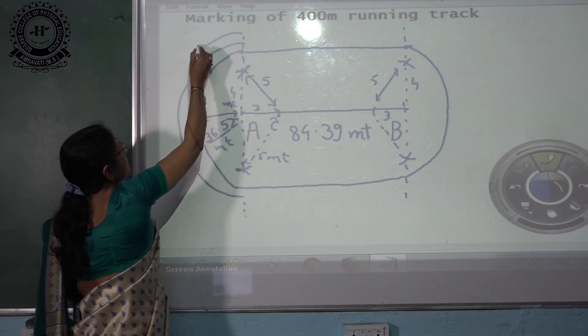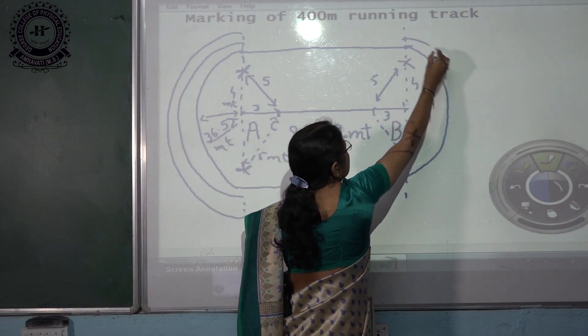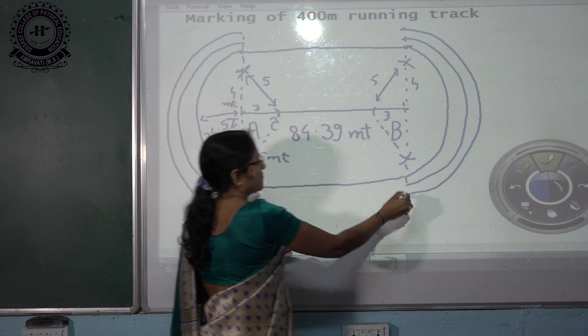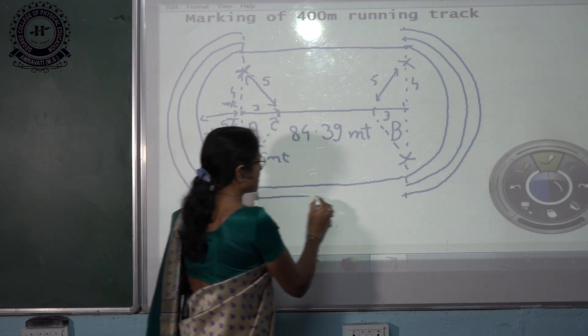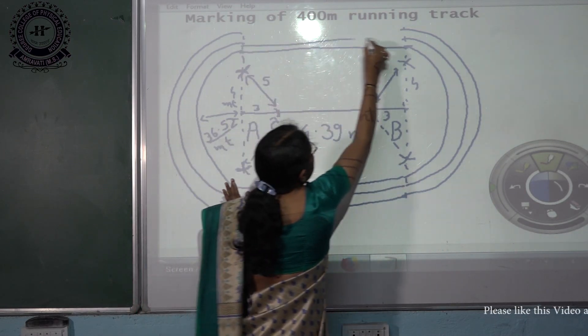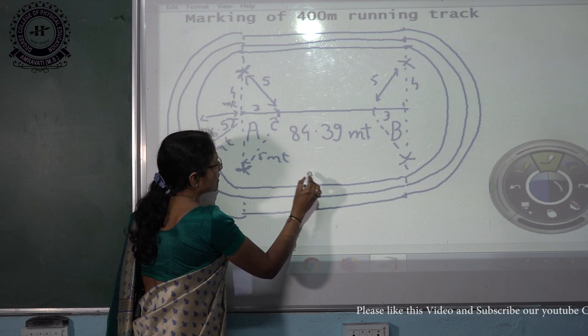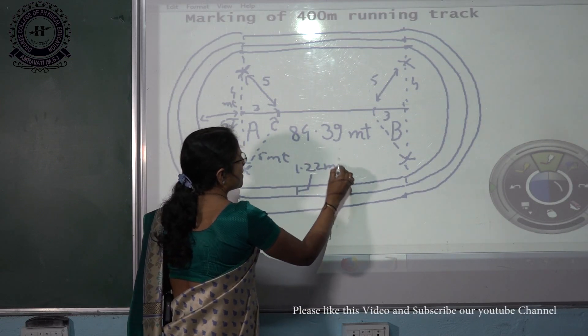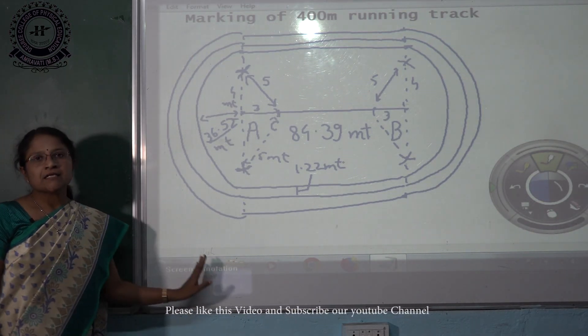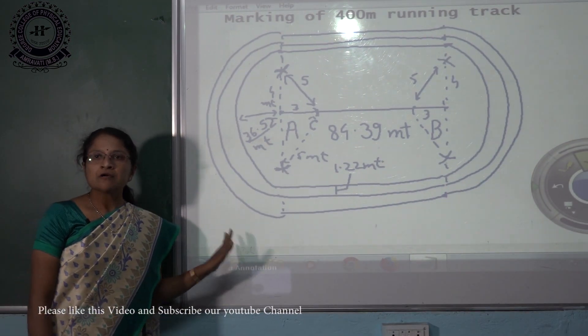So let us draw two lanes here and here and draw this by straight line. Distance between is 1.22 meters. So draw 8 lanes.